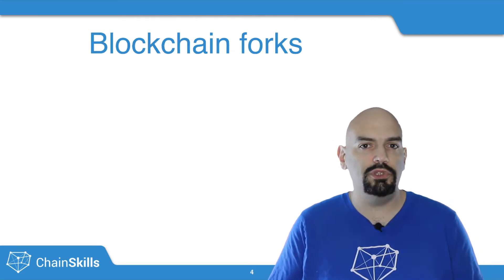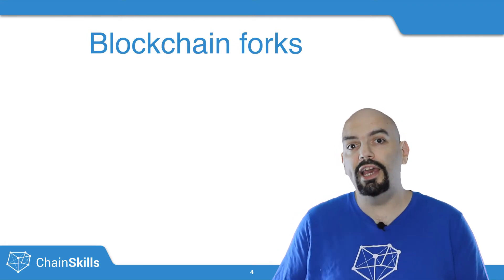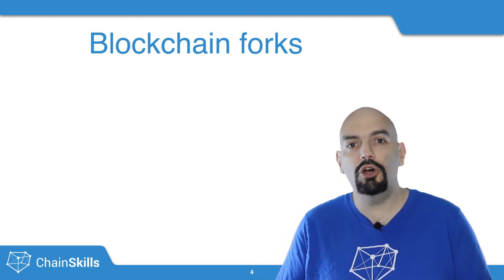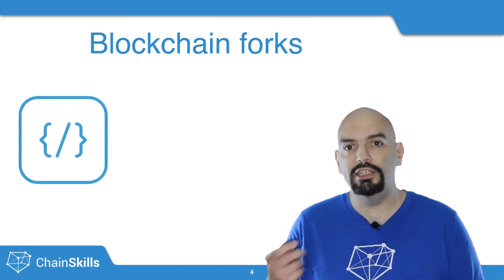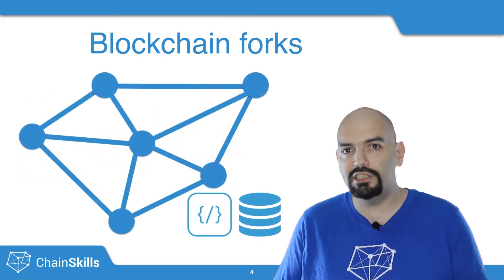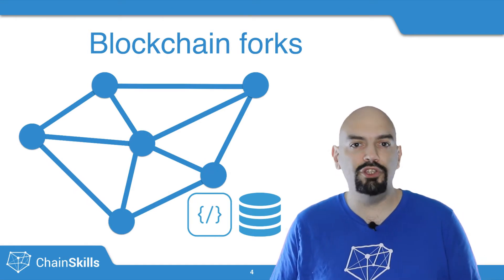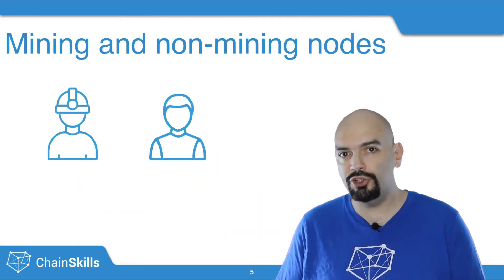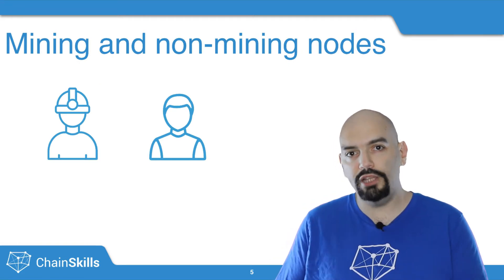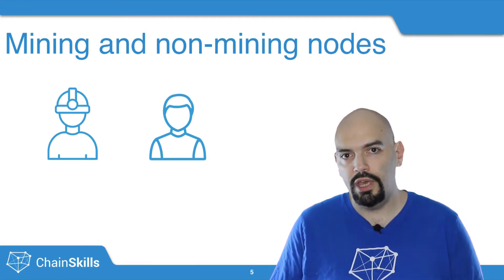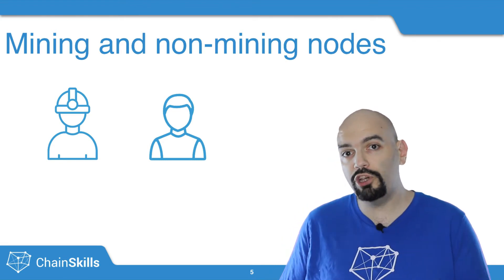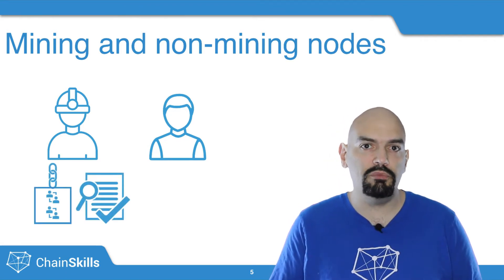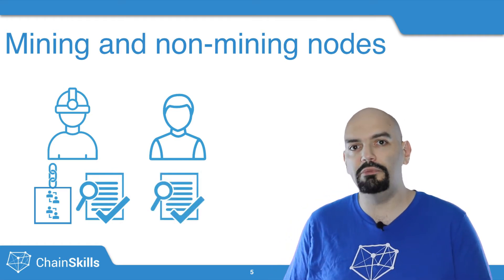In blockchain, a fork happens when you change the way blocks are fabricated, and hence the rules that govern whether a new block should be accepted into the chain or not. A blockchain instance is a mashup of some code and a database, both being distributed in the sense that the software runs on every node in the network, and every node holds a copy of the entire database. Certain nodes in the network, called miners, have the power to create blocks that they can broadcast to the whole network, and each node only accepts a block into its own copy of the blockchain once it has validated it.